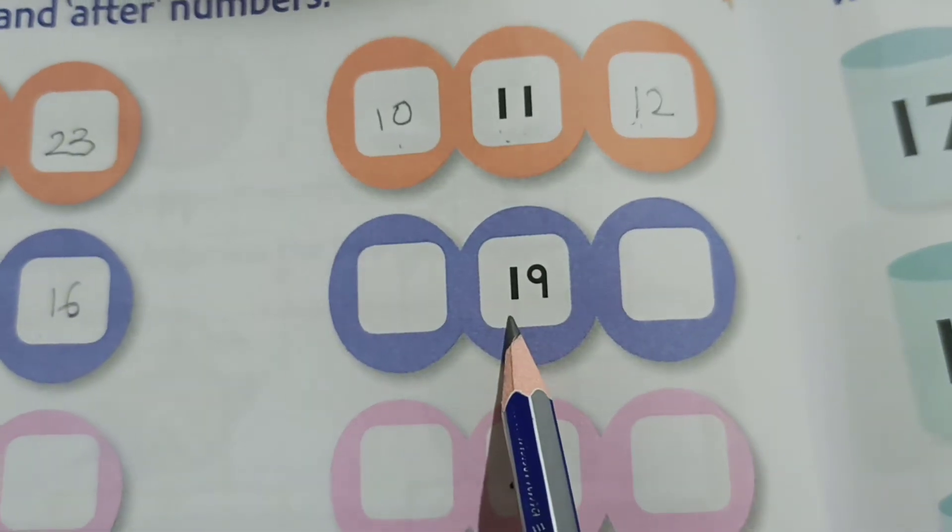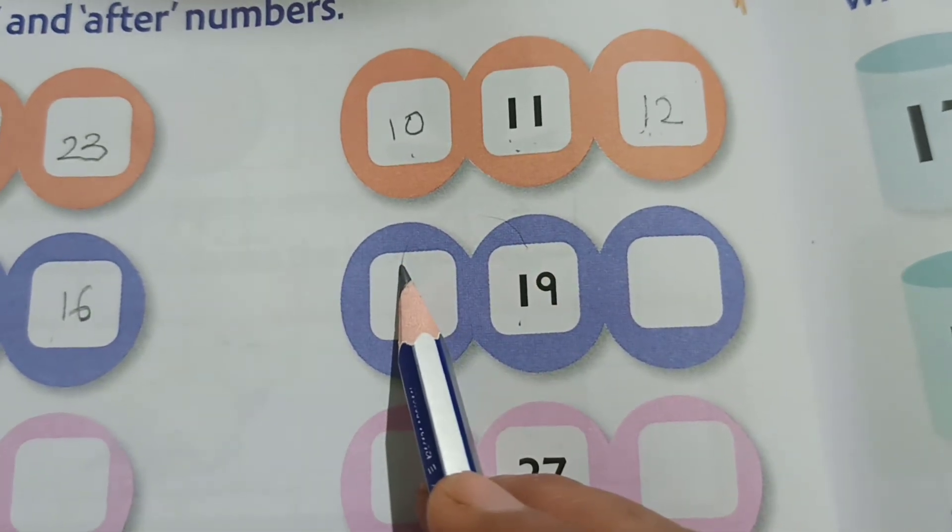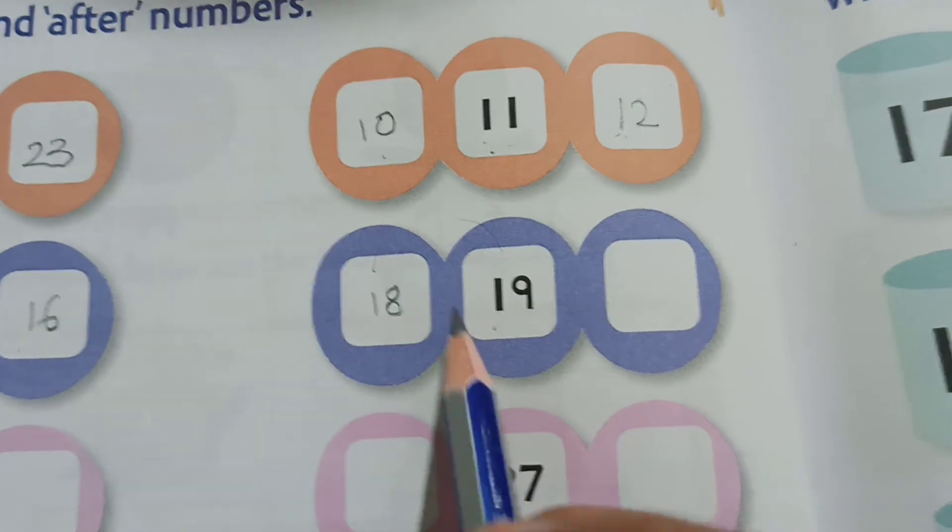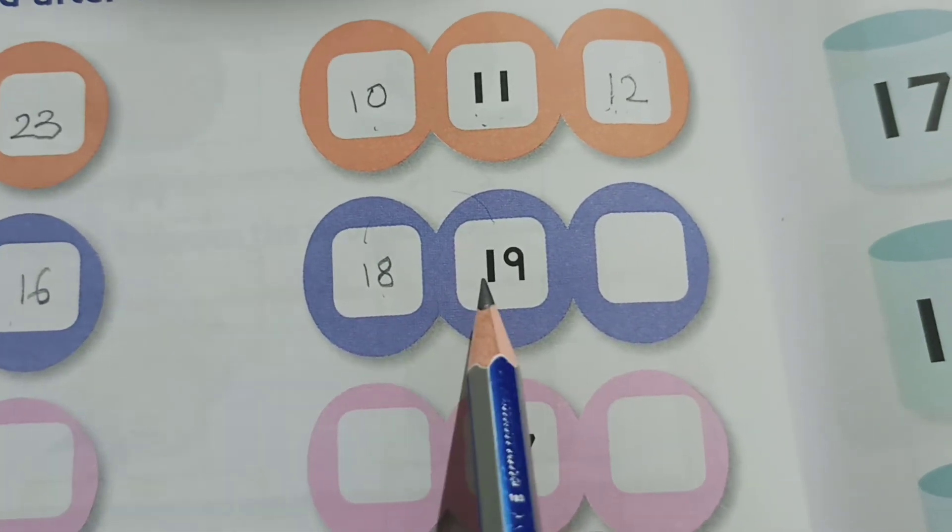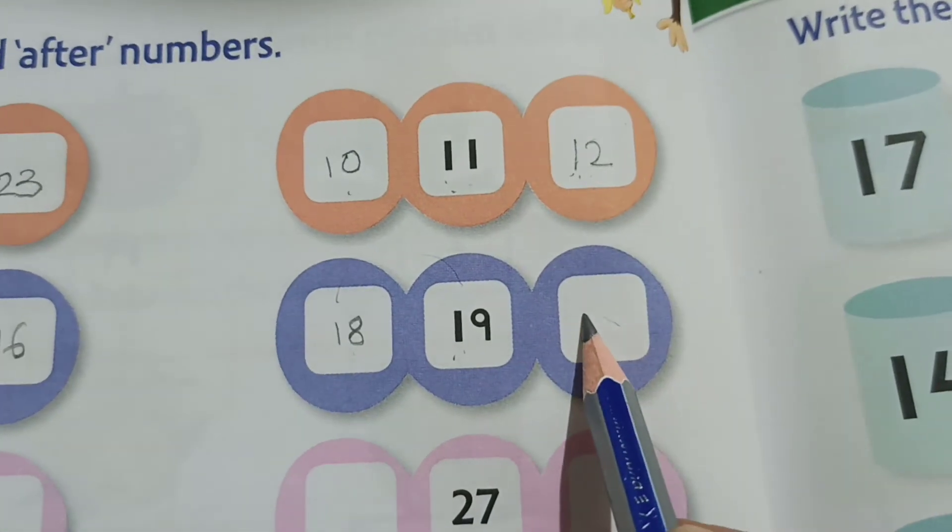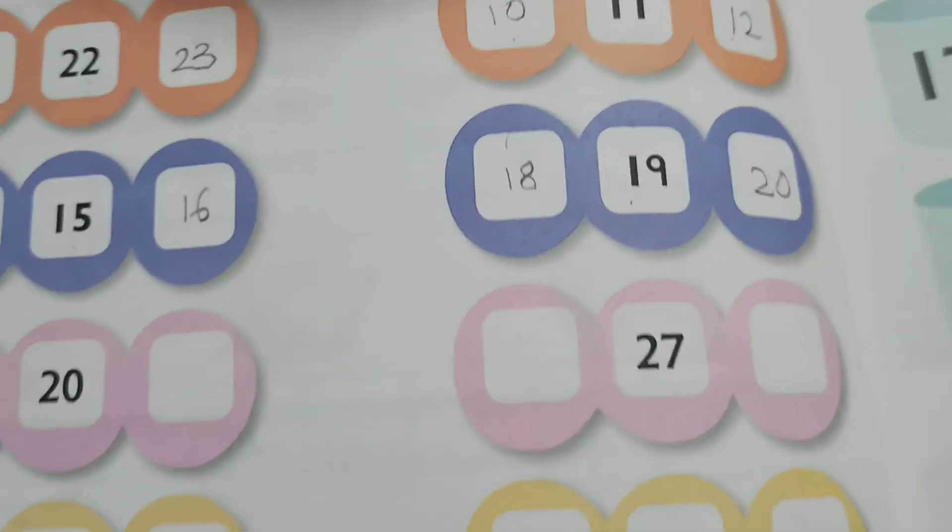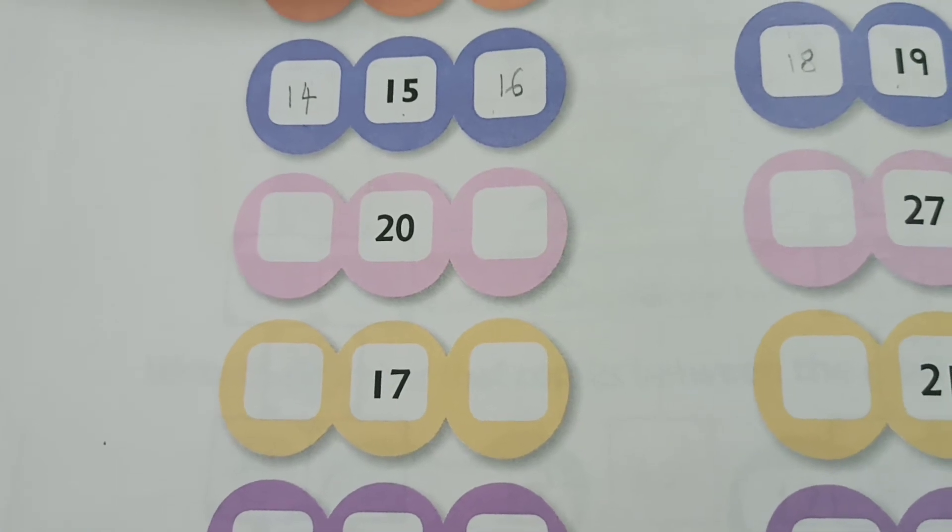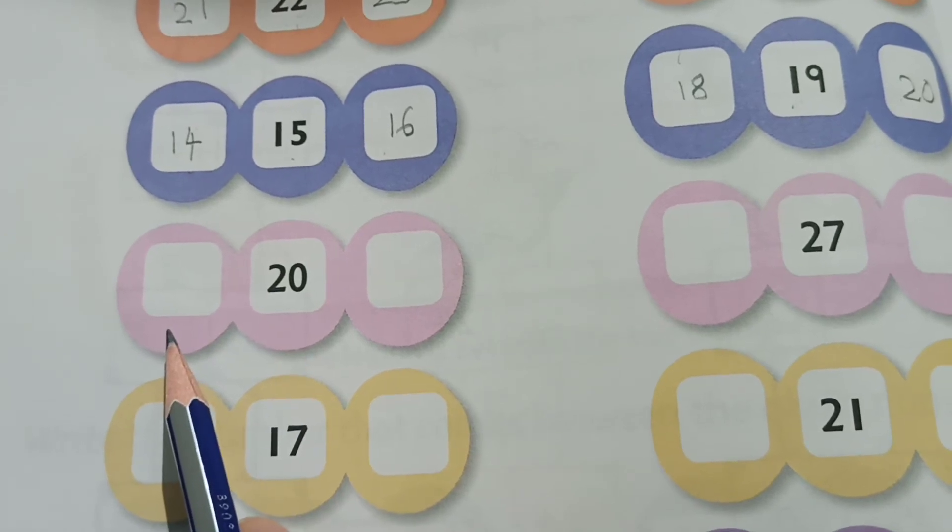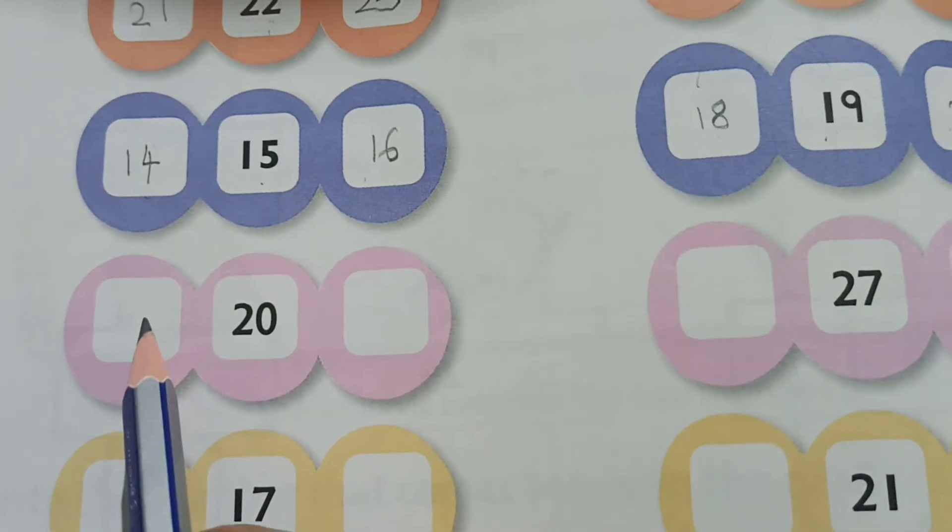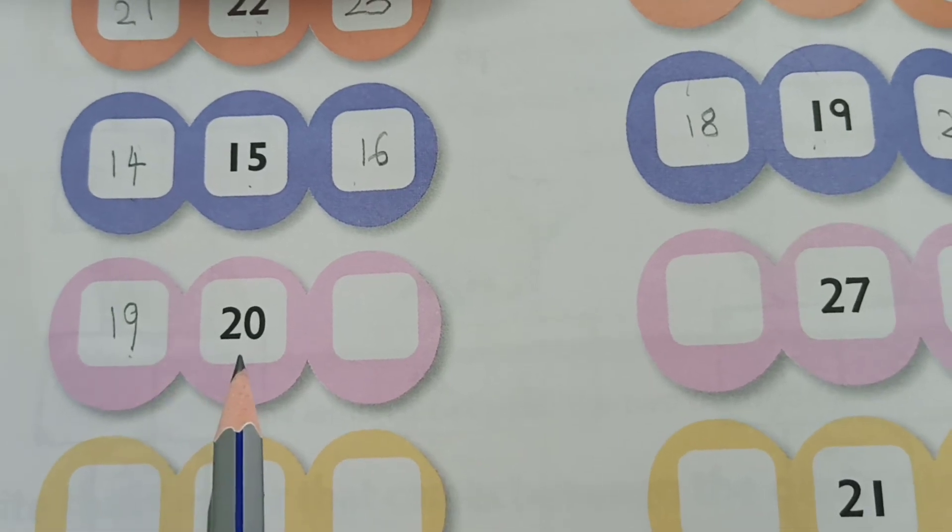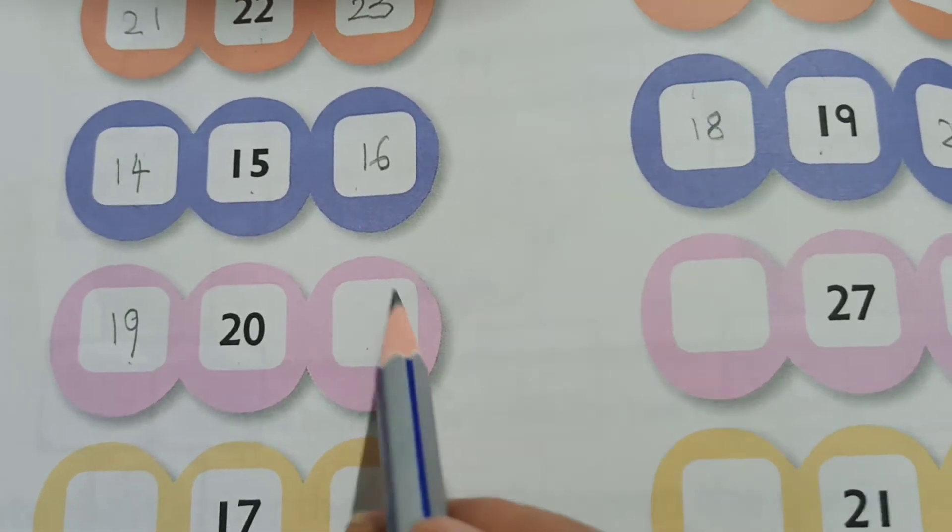Fourteen, fifteen, and the next number after fifteen is sixteen. Next here, nineteen. So what is the number before nineteen? What do we write before nineteen? Yes, we write eighteen. Eighteen, nineteen. And here what will we write? Eighteen, nineteen, and here nineteen, twenty. We will write twenty.